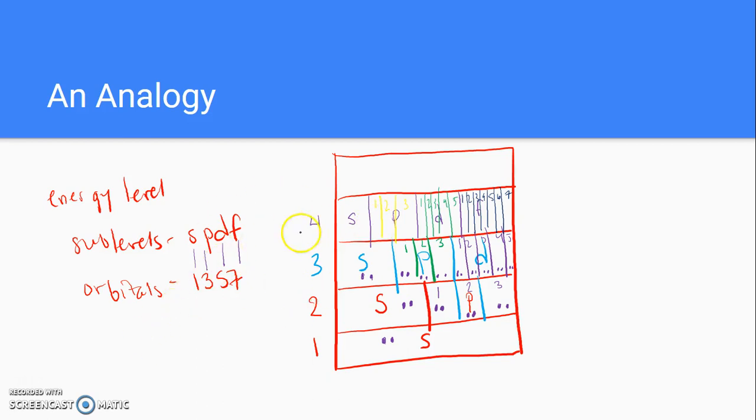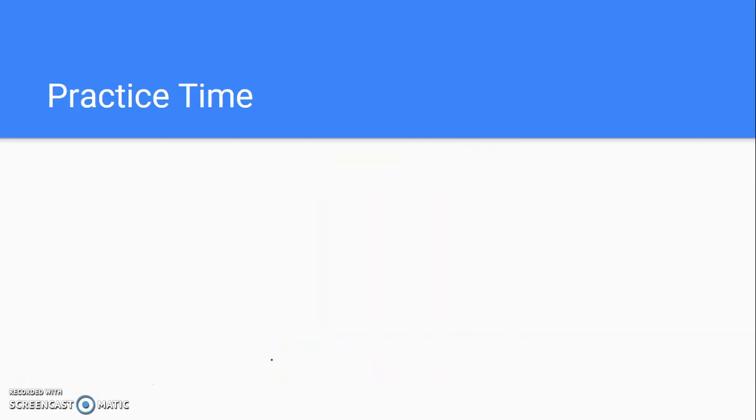So loose analogy, think of the apartment building. What I don't want you to do is on a test, I don't want you to tell me that energy levels are made up of apartments or that sub-levels are made up of rooms. You need to use the specific words that are used here. Energy levels are made up of sub-levels and sub-levels are made up of orbitals. But this should kind of help give you a picture of what it looks like.